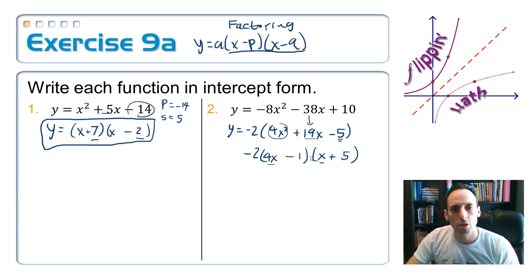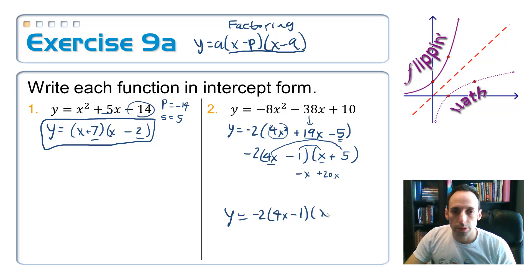Let's just check it. Just check it to be sure. Remember, you check it using this, like, rainbow thing, the inside and the outside terms. So, I get a negative x there, and the outside terms, I get a plus 20x. That's definitely 19x, so we did it right. y equals negative 2, 4x minus 1 times x plus 5. And, we're done. Nope.